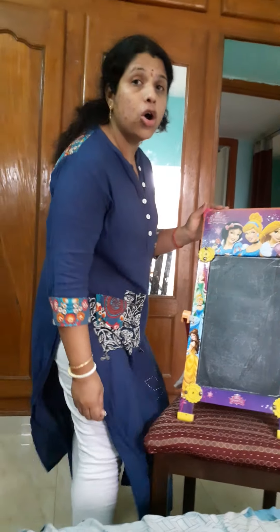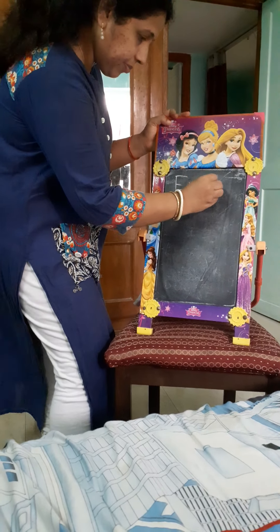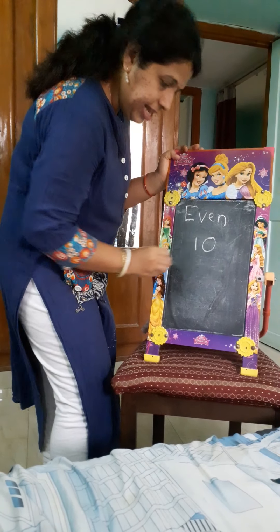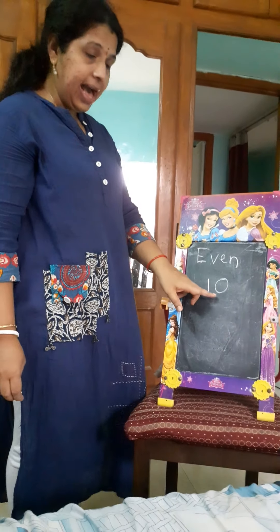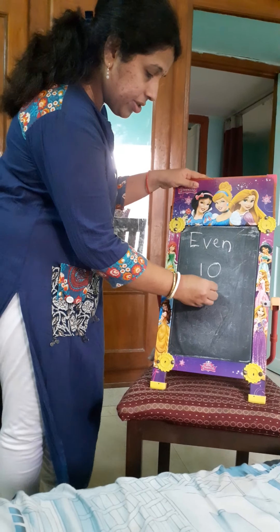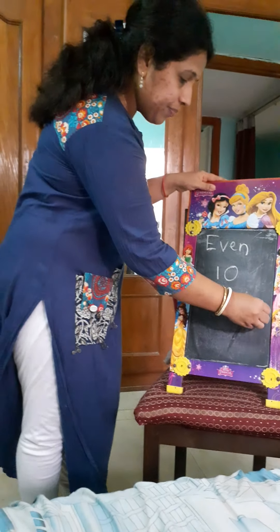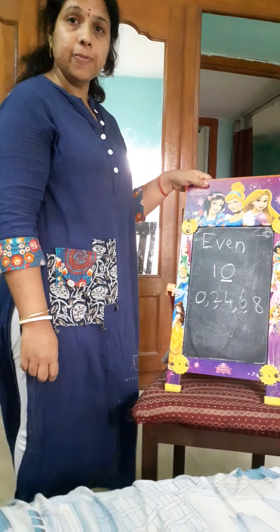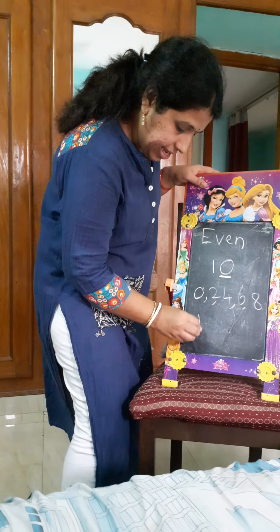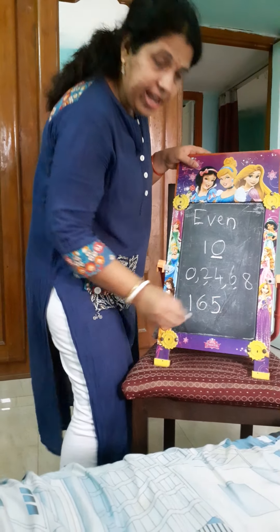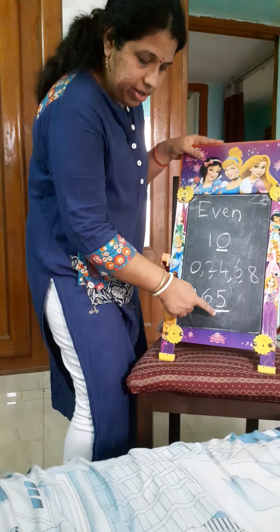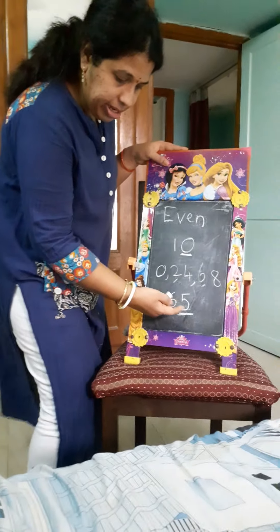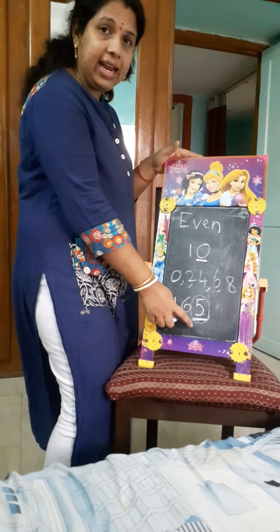Next comes even and odd numbers. What is an even number? A number having zero, two, four, six, or eight in the ones place is an even number — you should always check the ones place. For example, the number one hundred sixty-five has five in the ones place. Five is not in the list zero, two, four, six, eight, so this is an odd number.